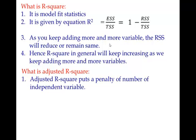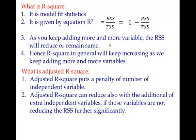Whereas adjusted R-square, it puts a penalty for number of independent variables. So what does it mean? In fact, adjusted R-square can also reduce with addition of extra independent variables if that variable is not reducing RSS further significantly. So if RSS has not reduced significantly by addition of extra variables, adjusted R-square actually may not increase.